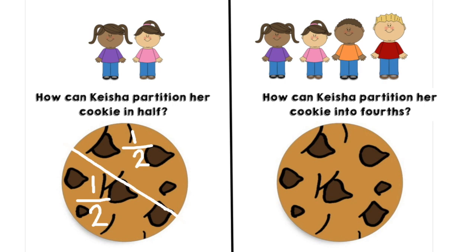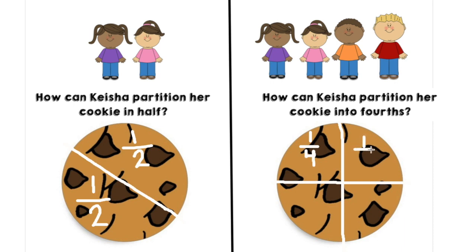First she could cut it with a vertical line up and down, and then she could cut it horizontally, making sure she's in the middle — not too far up, but in the middle. And look, there are now four equal parts of the cookie. Keisha will receive one out of the four equal parts, her first friend would receive one, her other friend would receive one, and that last friend would receive one. So each of them would receive a fourth — one fourth of the cookie.